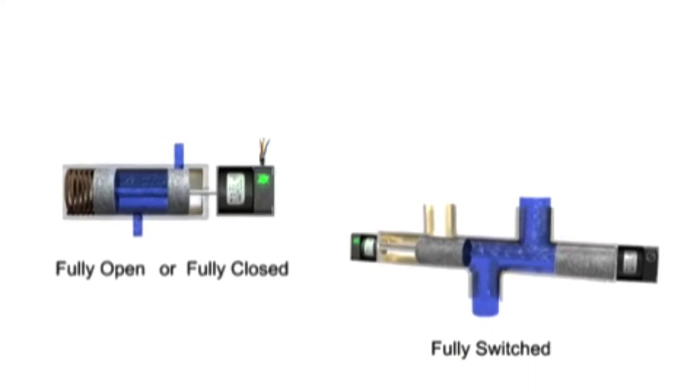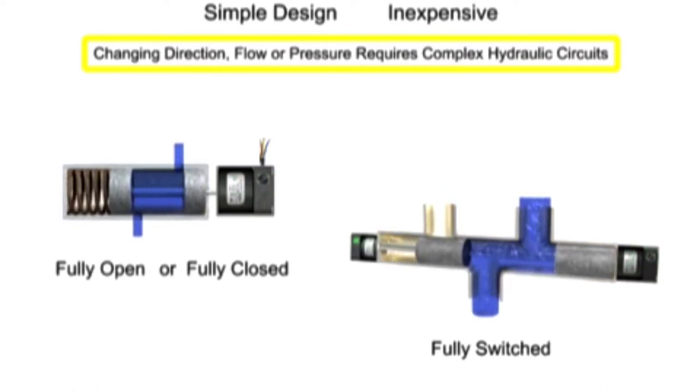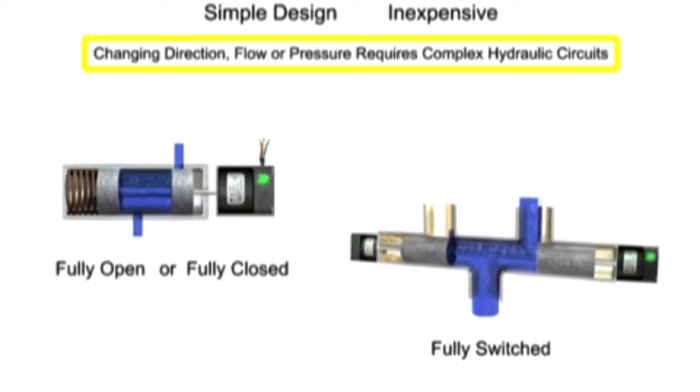Traditional control valves are of simple design and capability. Changing direction, flow, or pressure during machine operation would require a complex hydraulic circuit. Each desired direction, flow, or pressure would require an individual traditional valve to control it.